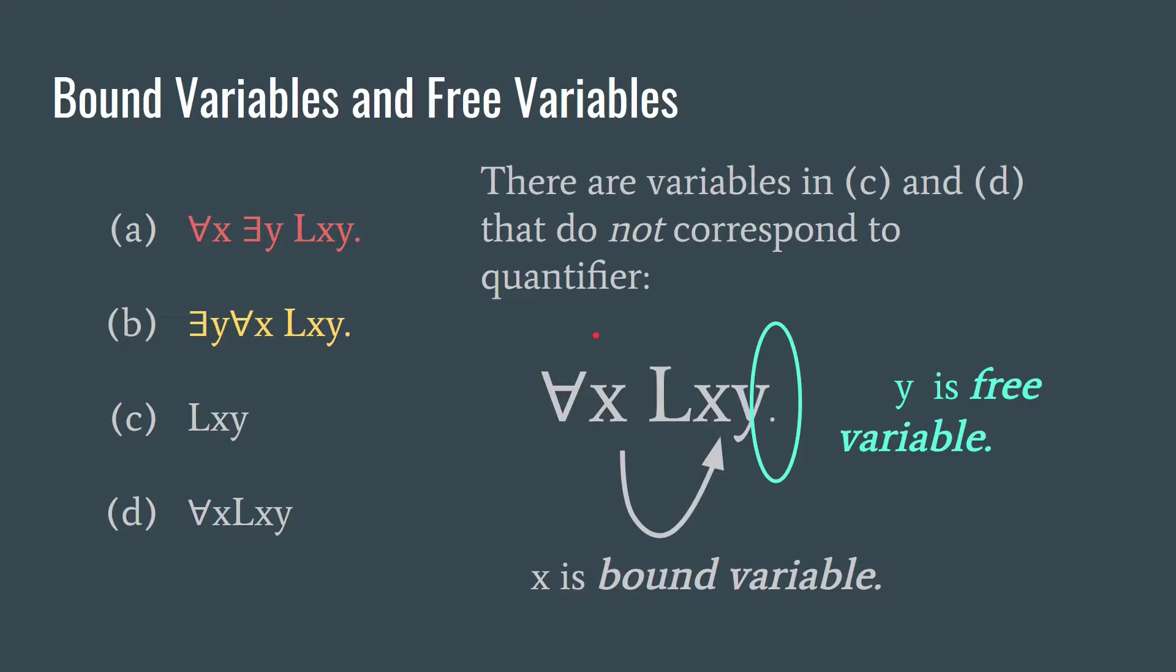Contrast those examples with these new ones. LXY and for all X, LXY. Notice that in these cases, if we look at C, X and Y here have no quantifiers corresponding to them. That means that both X and Y occur free in this one. In D, however, we have a universal quantifier corresponding to the X variable. So X is bound, but Y is free in this case. So very important distinction between free variables and bound variables. A free variable is when there's no quantifier corresponding to that variable and a bound variable is when there is a quantifier corresponding to that variable.